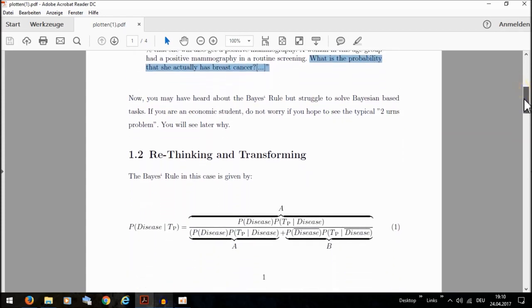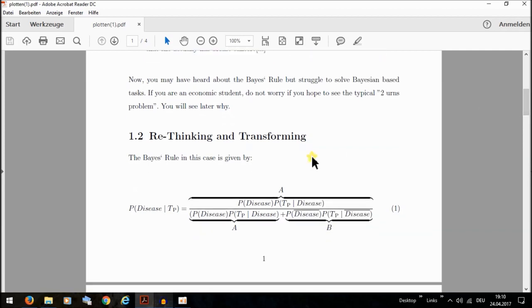If you now want to apply Bayes' Rule, the formula for the right solution would look like this, where you have the prevalence, the hit rate, the complement of the prevalence, and the false positive rate.